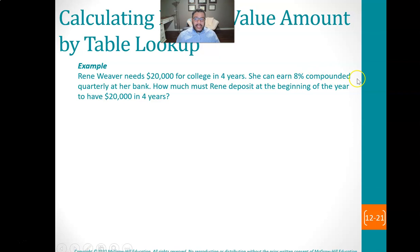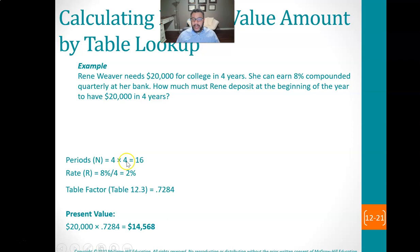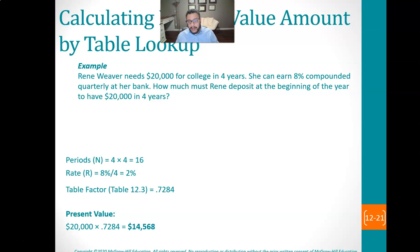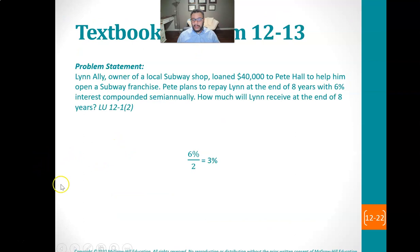Renee Weaver needs $20,000 for college in four years. She can earn 8% compounded quarterly at her bank. How much must Renee deposit today to have $20,000 in four years? We're looking for the present value, so we go to the present value chart. N = 4 times a year × 4 years = 16. R = 8 ÷ 4 = 2. The present value table factor at N=16, R=2 is 0.7284. So $20,000 × 0.7284 = $14,568. Renee needs to invest $14,568 today at 8% compounded quarterly to have $20,000 in four years.